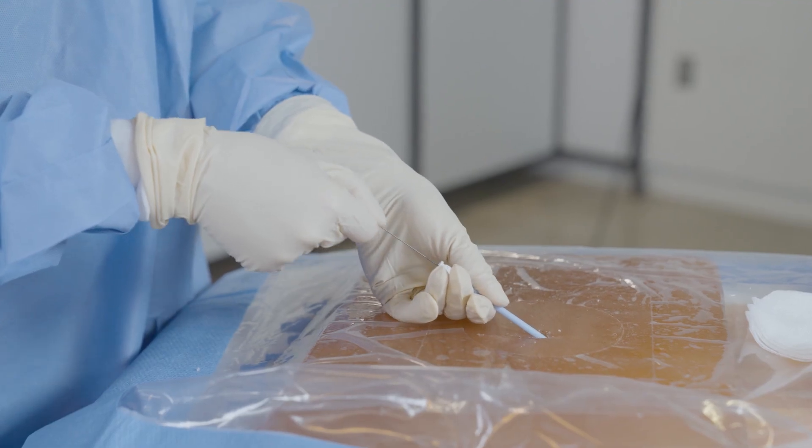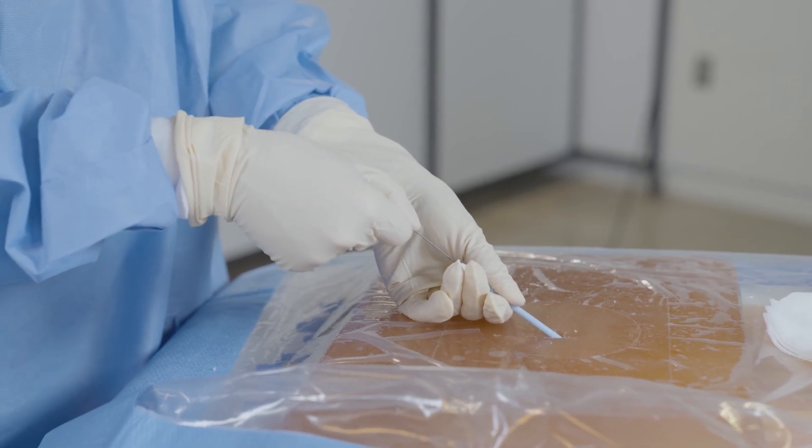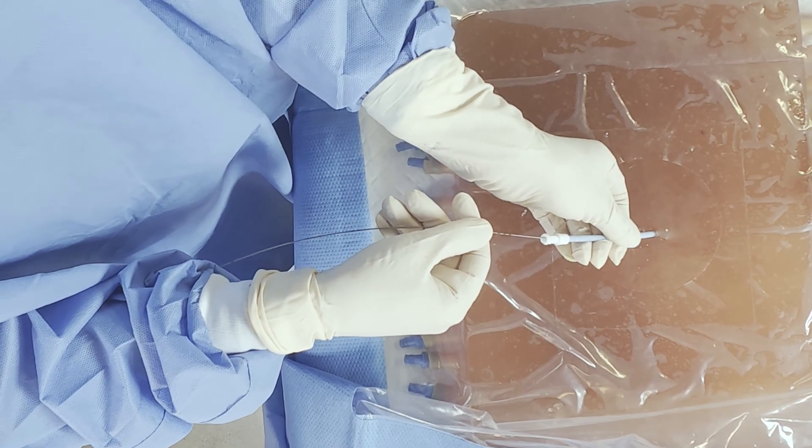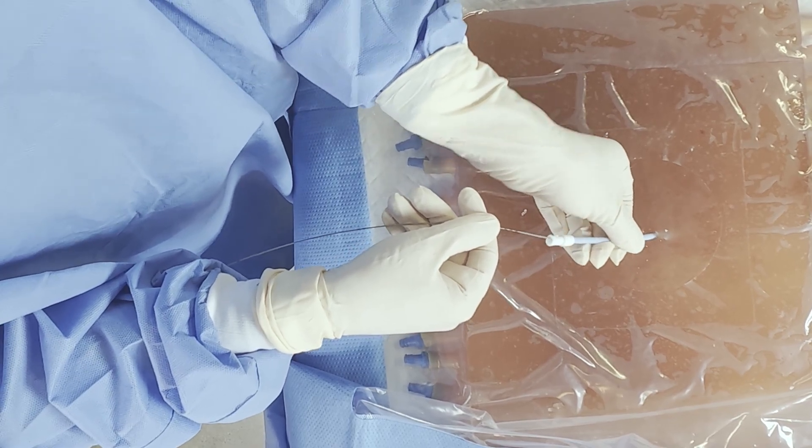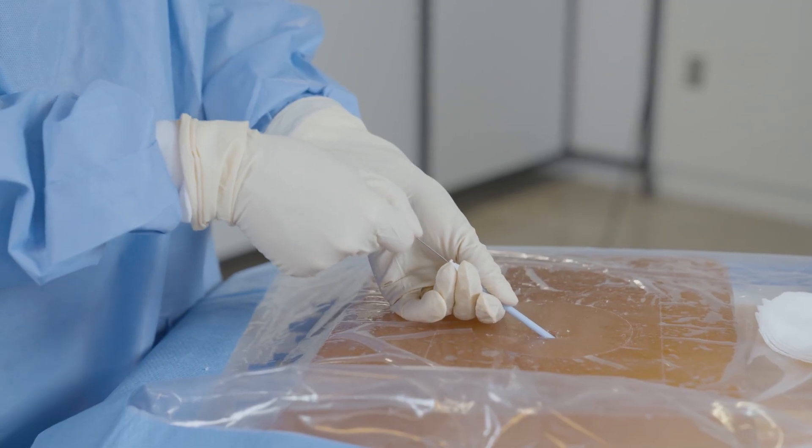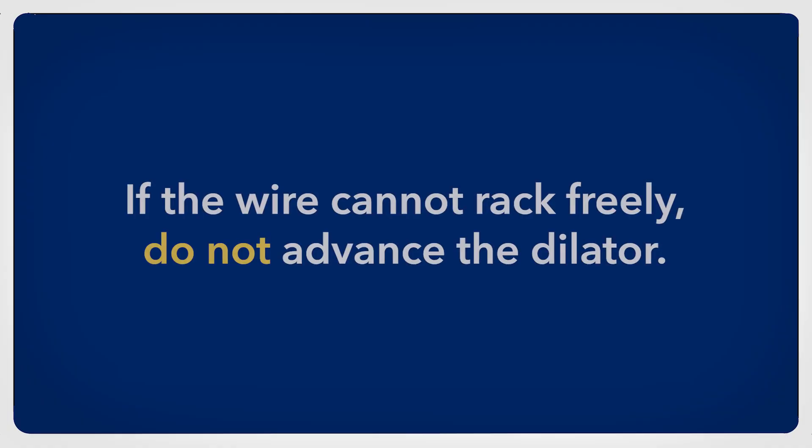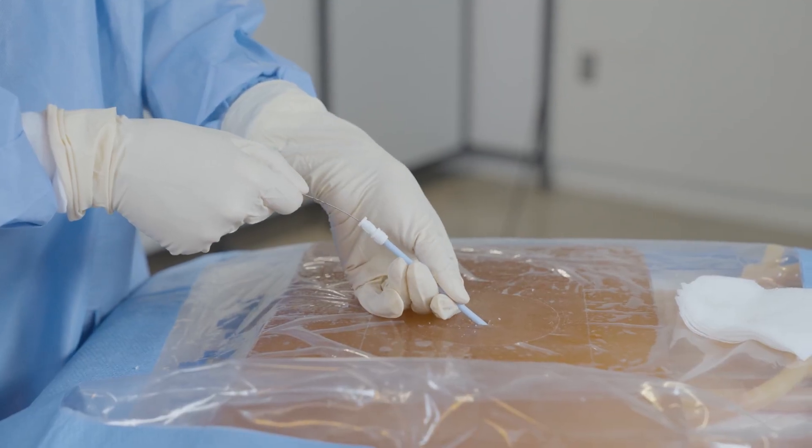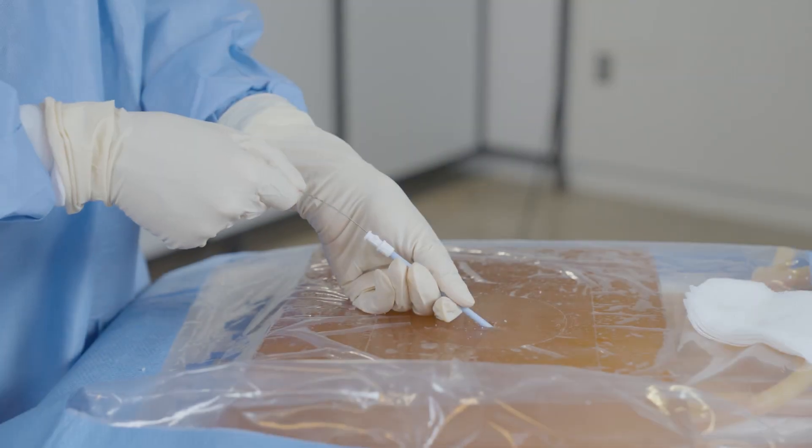Once you meet resistance with the dilator, rack your guide wire to confirm that the wire is able to move freely in the dilator. If the wire can rack freely, continue to dilate and rack the wire in this manner until you have dilated to the vessel. If the wire cannot rack freely, do not advance the dilator as doing so can kink your guide wire or damage the vessel. Instead, pull back on the dilator until the guide wire racks freely, adjust your angle and re-advance.